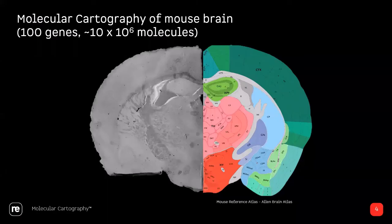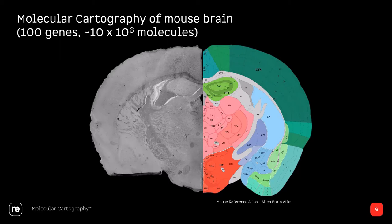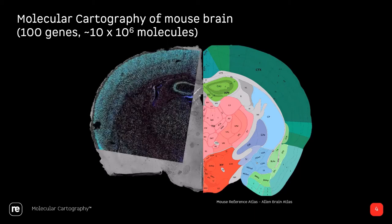To show what we do with our technology called Molecular Cartography, here is an example of a mouse brain — we typically use mouse brain as a benchmarking tissue. You see a coronal section alongside the Allen Brain Atlas. We applied Molecular Cartography on this tissue, and this overlaid picture shows all transcripts detected from 100 genes included in the experiment. We were able to detect around 10 million individual molecules, illustrating the data density and the number of individual transcripts you can capture with our technology.